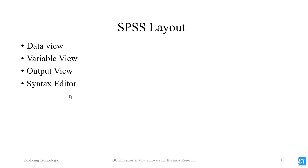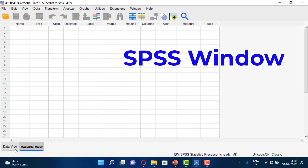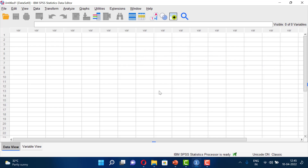The SPSS layout consists of data view, variable view, output view, and the syntax editor. We are now going to see each one separately. It has two main views: variable view and data view. This is our data view where we are going to enter some data.